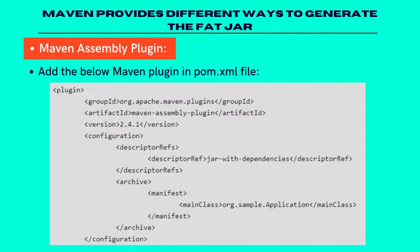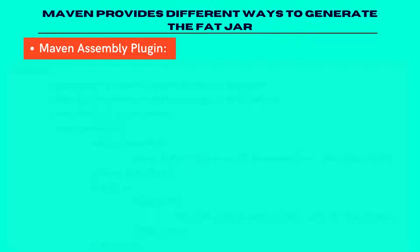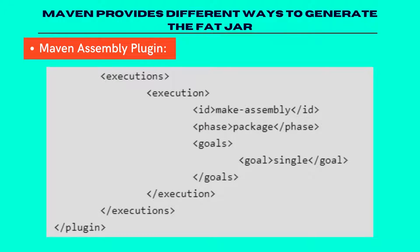Maven provides different ways to generate the fat jar. The first one is the Maven Assembly Plugin. Add the mentioned Maven plugin code in the pom.xml file. One point to note: if the project has no main class, then we can omit the archive section. The descriptor ref is the name that will be appended to the package name. The phase is used to specify when this Maven goal should execute. It is suggested to specify the package phase so that when we invoke MVN package, the jar with all dependencies will also be generated.